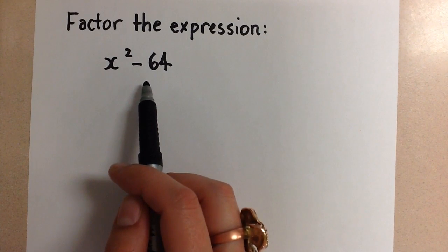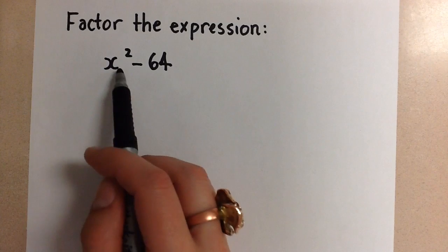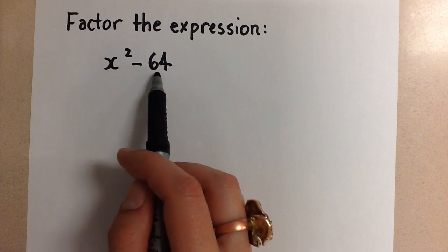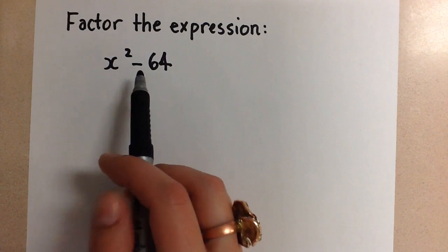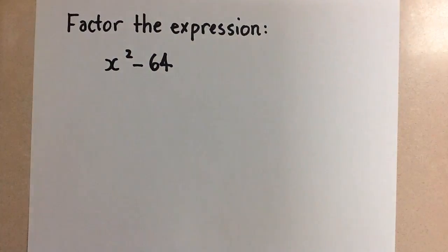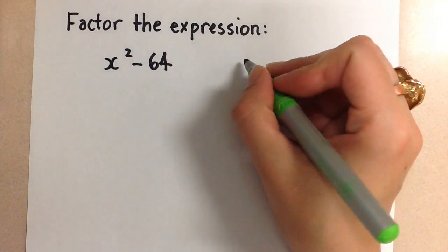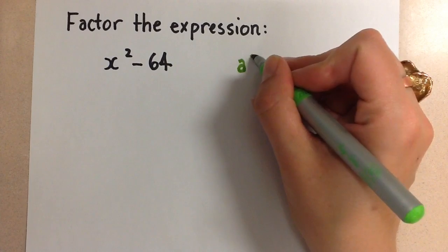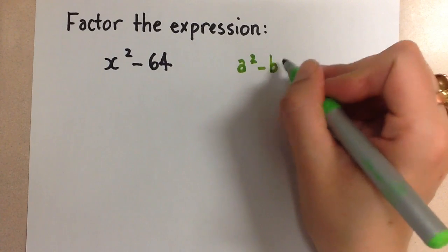A difference of squares means that we have a perfect square minus a perfect square, hence the difference of squares. So anytime we have an expression that looks like this, a squared minus b squared,